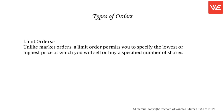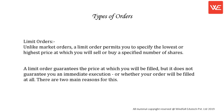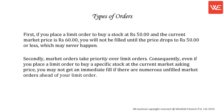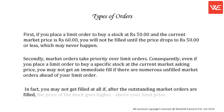Unlike market orders, a limit order permits you to specify the lowest or highest price at which you will sell or buy a specified number of shares. A limit order guarantees the price at which you will be filled, but it does not guarantee immediate execution or whether your order will be filled at all. First, if you place a limit order to buy a stock at 50 rupees and the current market price is 60 rupees, you will not be filled until the price drops to 50 rupees or less, which may never happen. Secondly, market orders take priority over limit orders — even if you place a limit order at the current market asking price, you may not get an immediate fill if there are numerous unfilled market orders ahead of yours, or if the price goes higher above your limit price.